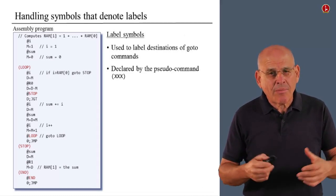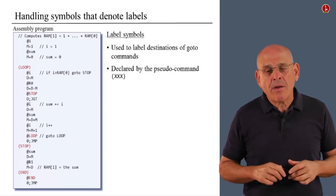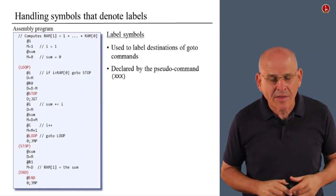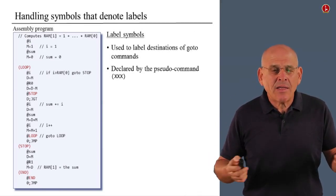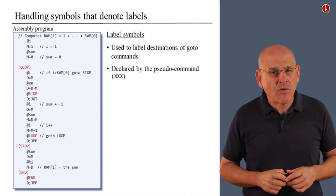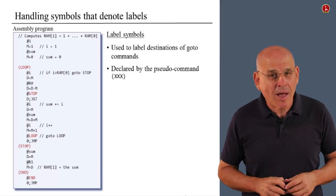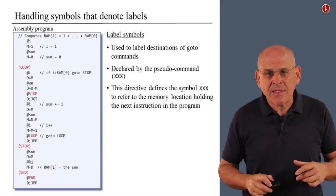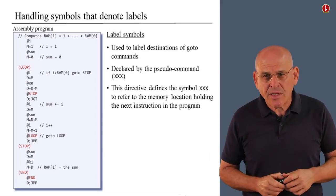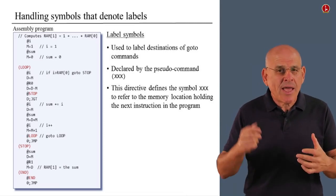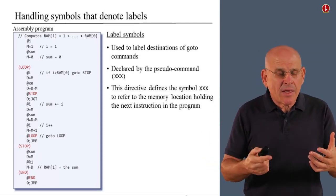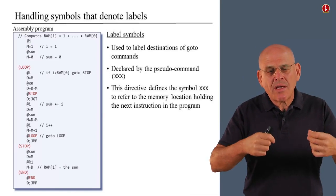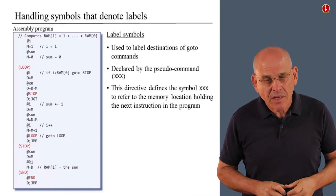So, we declare label symbols using the agreed upon parentheses. You might ask yourself, why parentheses? Why not label colon or something like this? Well, when Noam and I designed this language, we decided to use this syntax, once again for reasons that will become clear later on. Now, once we declare a symbol using round parentheses, the meaning of this declaration is that from now on, whenever we see XXX in the program, we mean to replace it with the address of the memory location that contains the next instruction in the program.